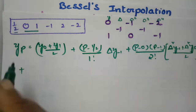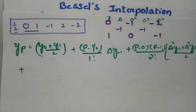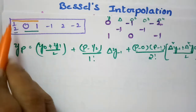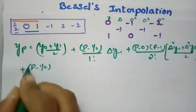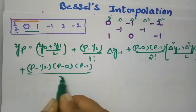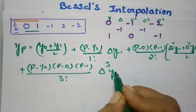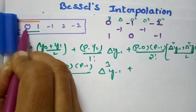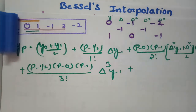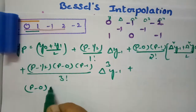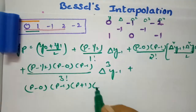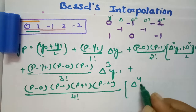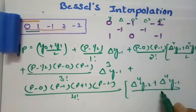Continuing the formula: plus (p minus 1/2)(p)(p minus 1) divided by 3 factorial, times the third difference Δ³y₋₁, plus p(p minus 1)(p plus 1)(p minus 2) divided by 4 factorial, times the fourth difference Δ⁴y₋₂, and so on.